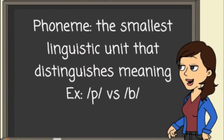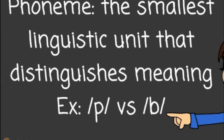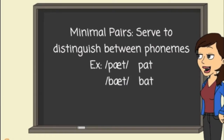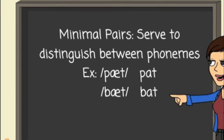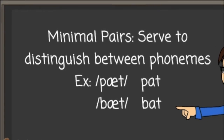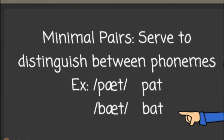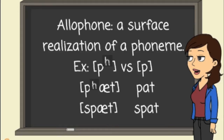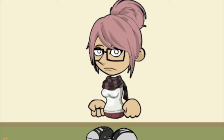A phoneme is the smallest linguistic unit that distinguishes meaning. Minimal pairs are pairs of words that differ in only one sound in the same location. For example, pat and bat are minimal pairs. An allophone is any of the various surface realizations of a phoneme that do not distinguish between meaning. For example, an aspirated P in pat versus an unaspirated P in spat are allophones.